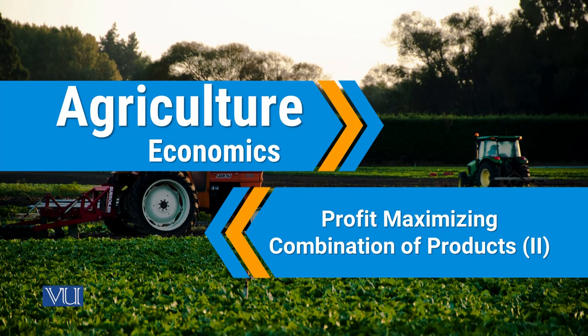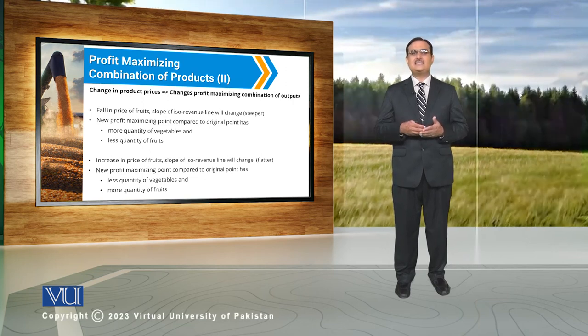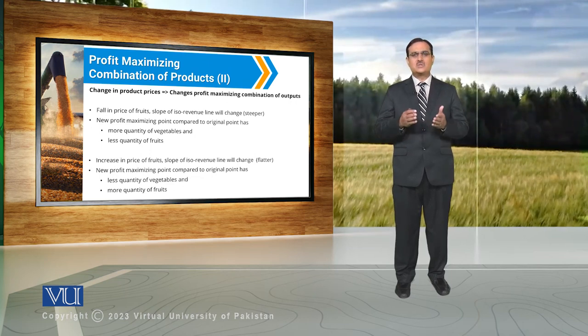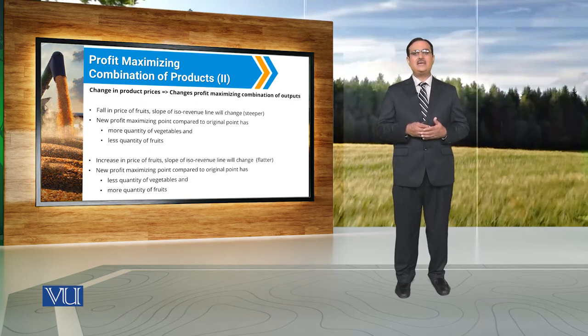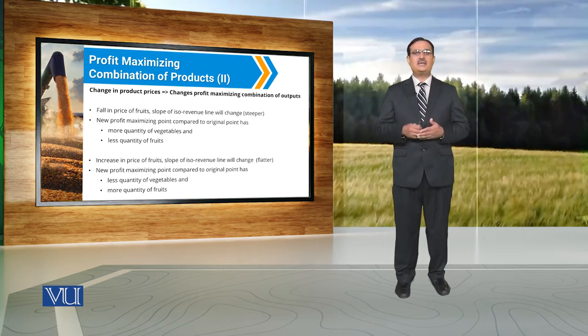We used the Production Possibility Frontier to elaborate different combinations of two outputs that a farmer can produce. We then decided on the basis of the slope of the ISO revenue curve and the slope of the Production Possibility Frontier. When there is a change in product prices, there is a change in the slope of the ISO revenue curve, which leads to a change in the profit-maximizing combination of outputs the farmer should produce.